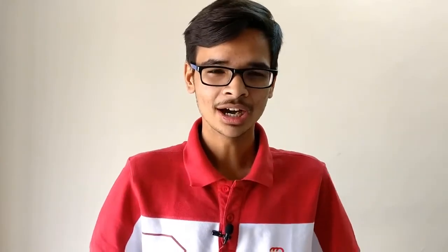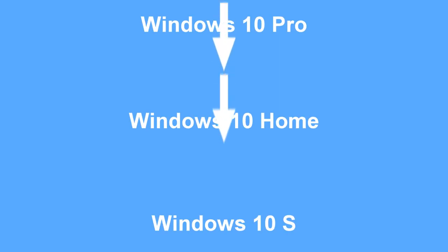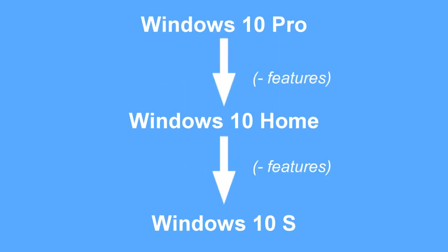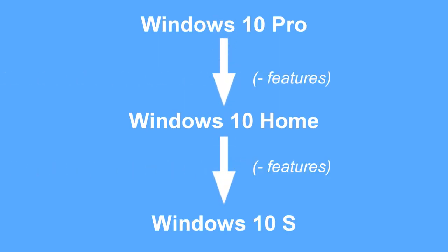Microsoft launched a third version of Windows 10 called Windows 10 S — S stands for Streamline. You might think it would be simply Windows 10 Pro or Home minus some features, but that's not the case. Windows 10 S is actually a mix and mash of Windows 10 Pro and Windows 10 Home, but with some features excluded for security reasons.